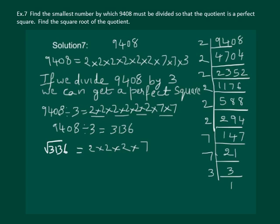And this is equal to 56. Hence, the square root of 3136 is equal to 56.